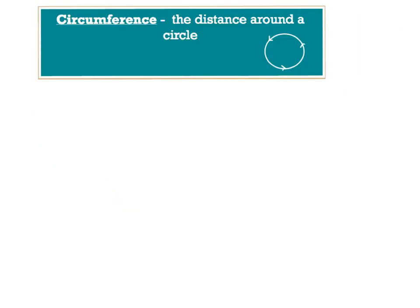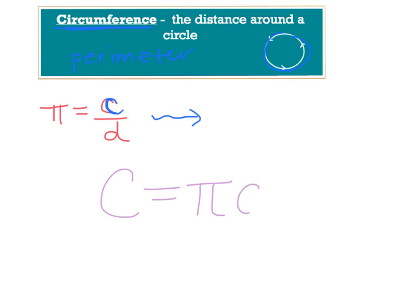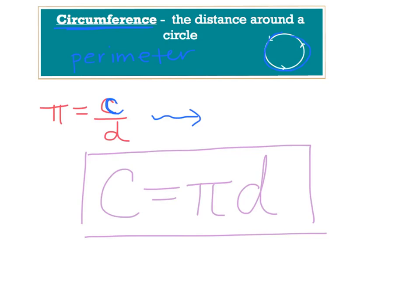Circumference is the distance around the outside of a circle — another word for that is perimeter. When you want to find the circumference of a circle, there's a formula: circumference equals pi times diameter. They got it from the finding of pi, since pi equals circumference divided by diameter, then they solved for circumference. Please put that in your notes — we're going to be using that a lot. You take pi, we're always going to use 3.14, and multiply it by whatever the diameter is.